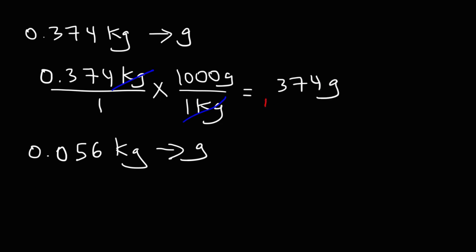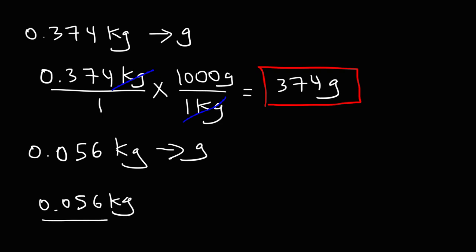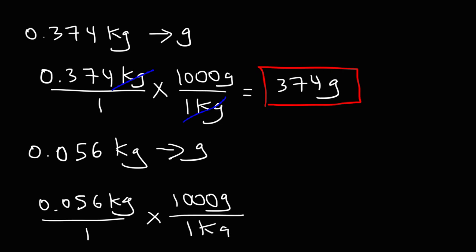That's the answer for the first example. For the second, we follow the same process: multiply 0.056 kilograms by 1,000 grams over 1 kilogram. So 0.056 times 1,000 is 56 grams.